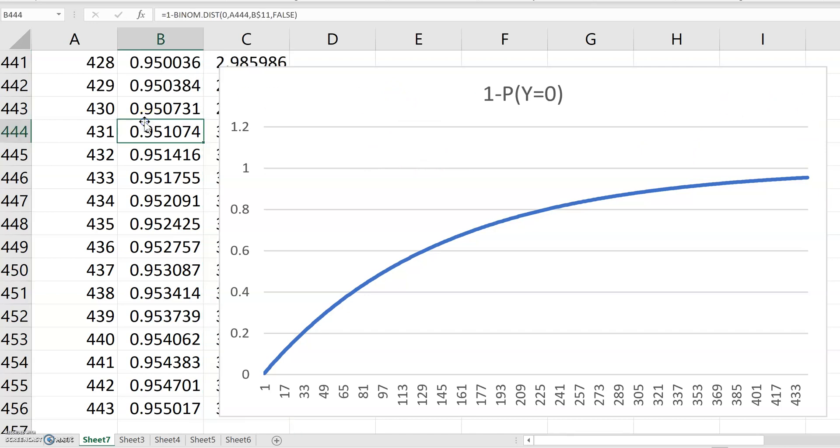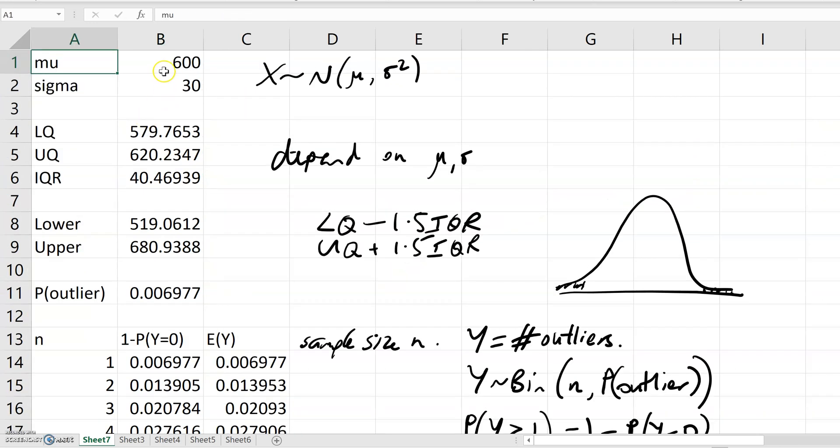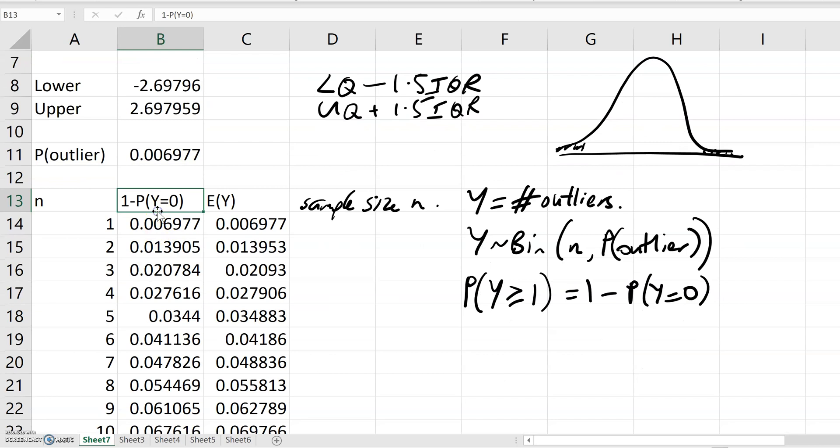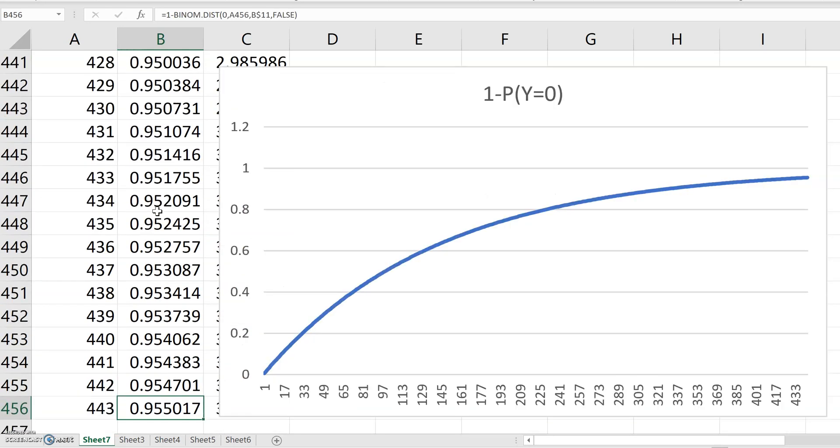Let me just do one more thing again, just reminding that this doesn't depend on the parameters of that normal distribution. So check out the graph again, exactly the same as it was before, so completely independent of the parameters.